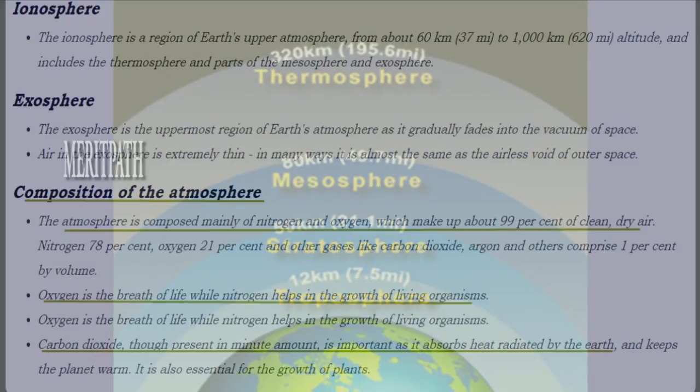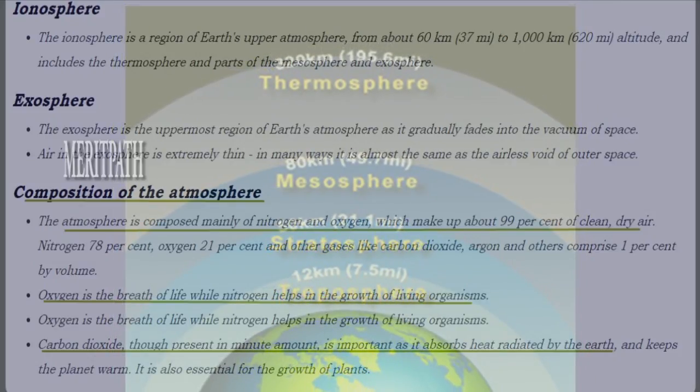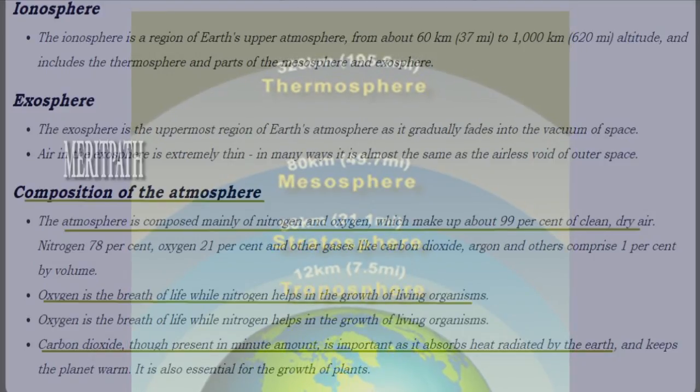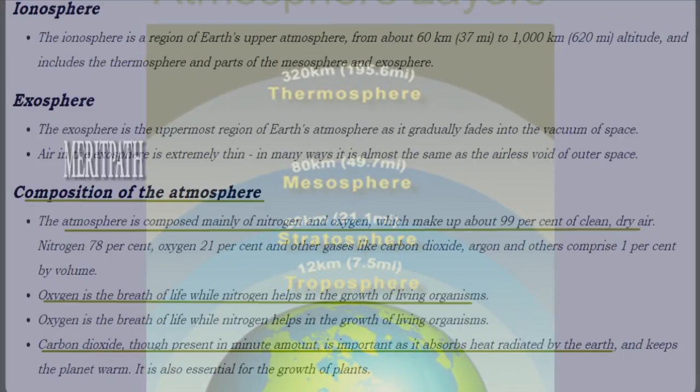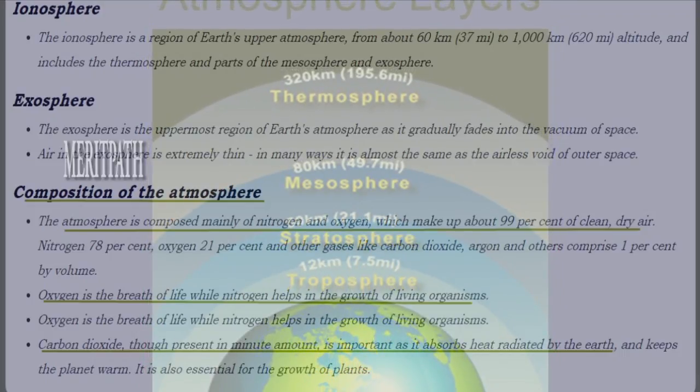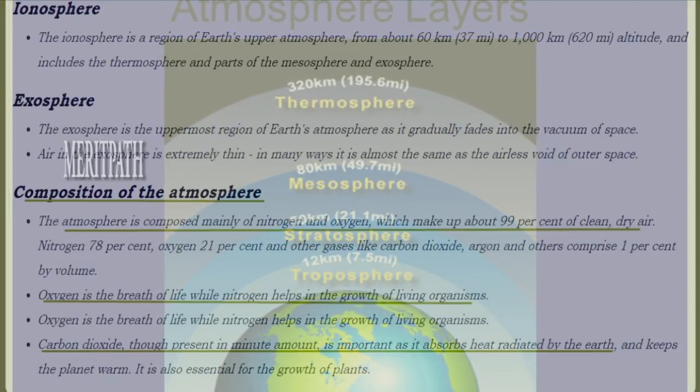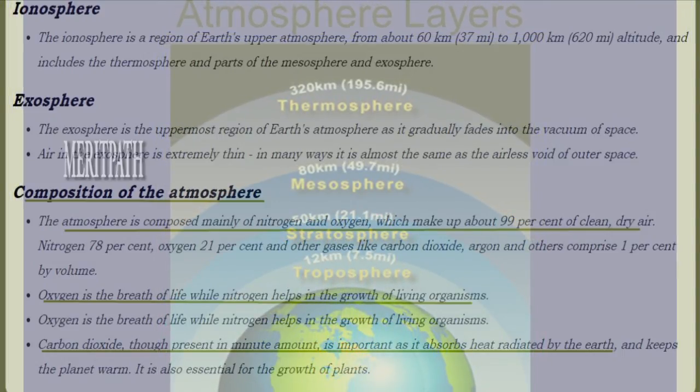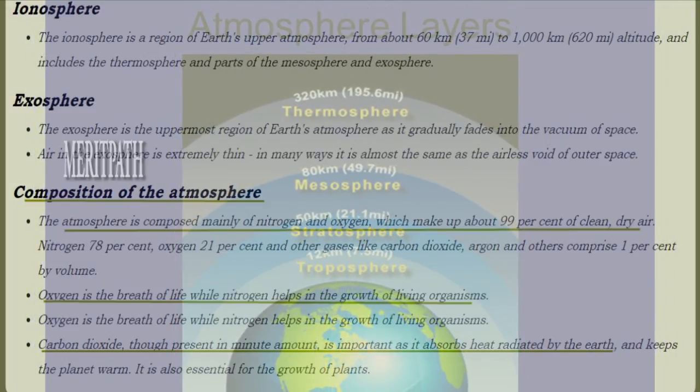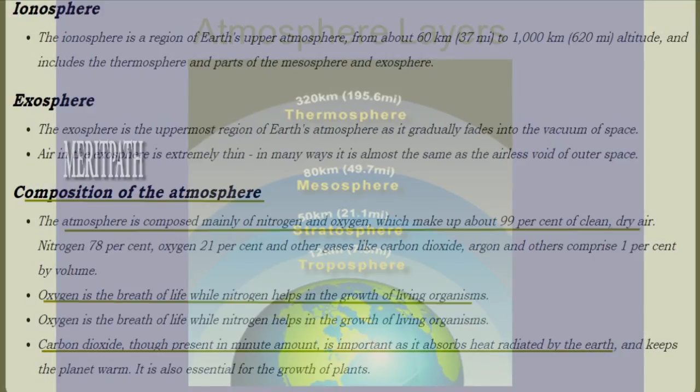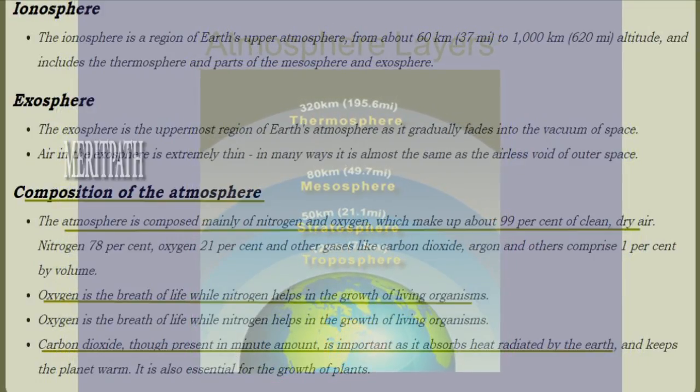The atmosphere is composed mainly of nitrogen and oxygen, which make up about 99% of clean, dry air. Nitrogen is 78%, oxygen 21%, and gases like carbon dioxide comprise 1% by volume. Oxygen is the breath of life, while nitrogen helps in the growth of living organisms.